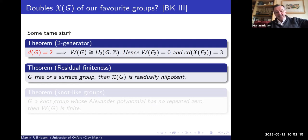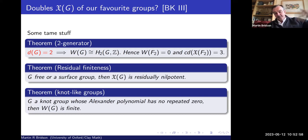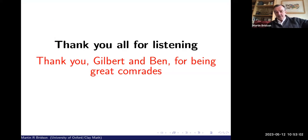There are also questions about when doubles are residually finite. The doubles of free groups and surface groups are residually finite — in fact residually nilpotent — even though they have infinite homological dimension. For knot groups, if the Alexander polynomial has no repeated zeros, the normal abelian subgroup W is finite. These are sample results from a rich new class of finitely presented groups well worth exploring.